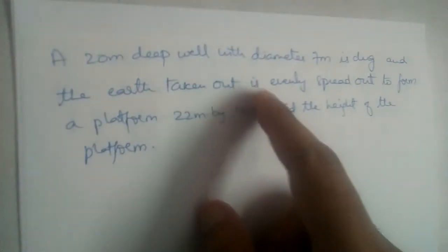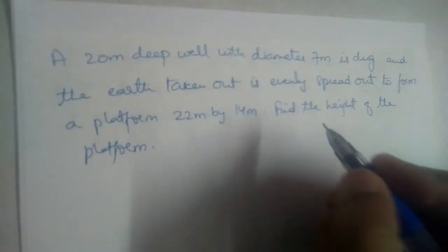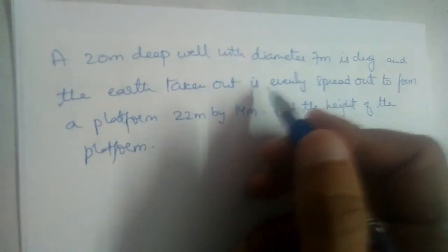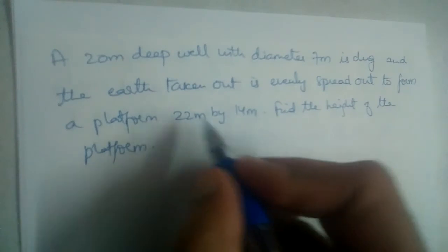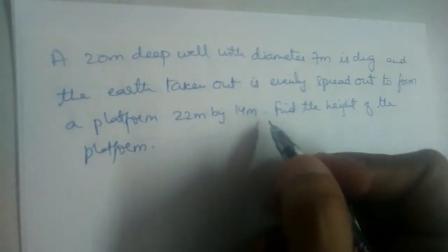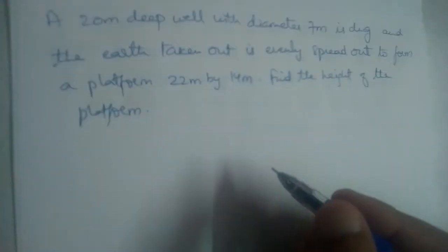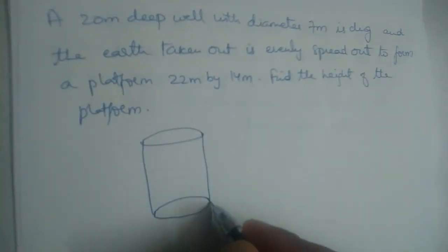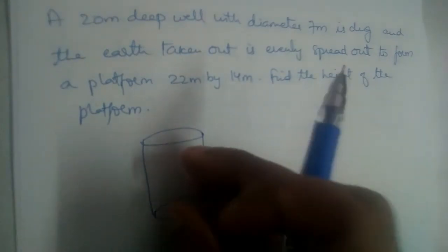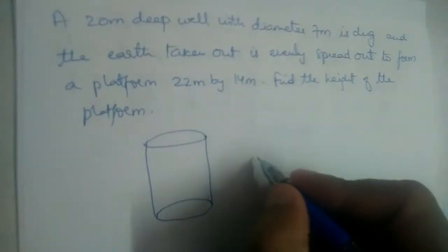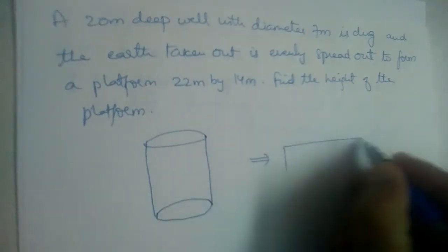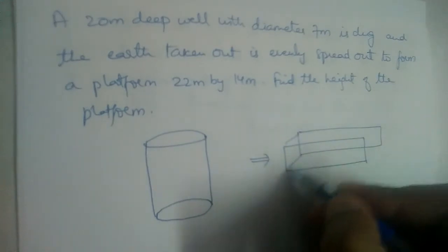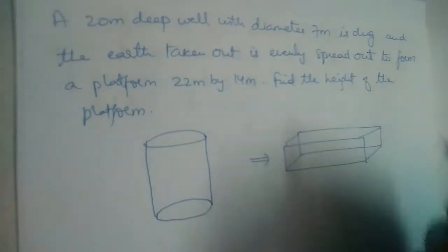A 20 meter deep well with diameter 7 meters is dug and the earth taken out is evenly spread to form a platform 22 meters by 14 meters. Find the height of the platform. We are digging a well and the mud or earth taken out is made into a platform, a cuboid.